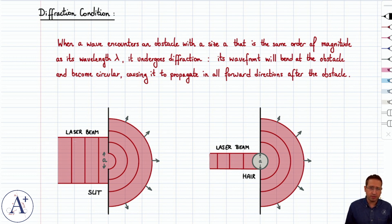When a wave encounters an obstacle that has a size A that is of the same order of magnitude as its wavelength lambda, it undergoes diffraction, meaning that its wave front bends at the obstacle, becomes circular, and causes it to propagate in all four directions after the obstacle.